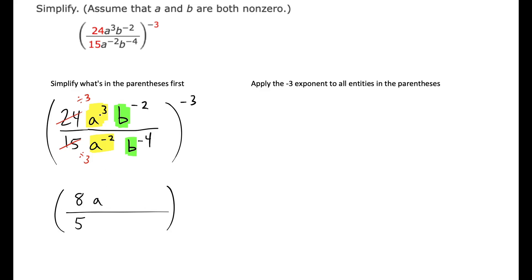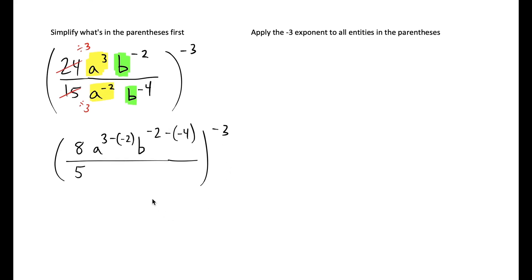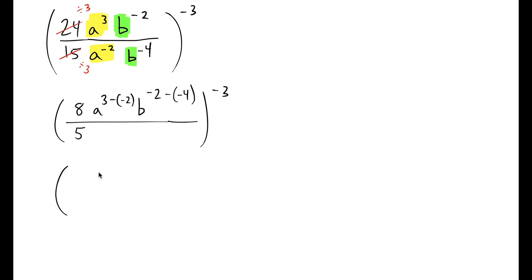Now I'm going to use the subtraction rule where I subtract the exponents of A, so it's going to be 3 minus negative 2. You can't forget the double negative here - subtraction because it's a fraction, but the denominator exponent has a negative, so it's double negative. Same thing for the B's: negative 2 minus negative 4. 3 plus 2 makes 5, and negative 2 minus negative 4 is like negative 2 plus 4, which makes 2.